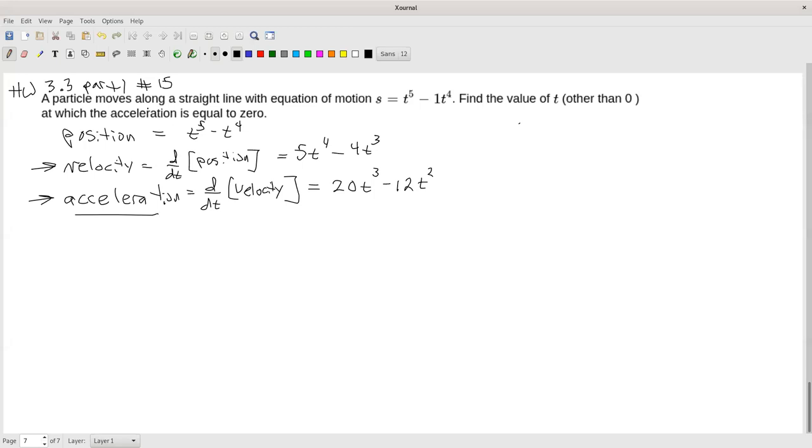And we want to know when is acceleration equal to 0. So we just set that sucker equal to 0. And we should be able to factor this. I can pull out a t squared and a 4, so I'm going to factor out 4t squared.